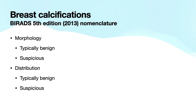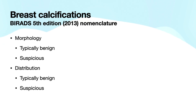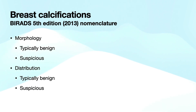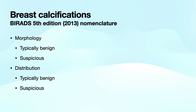With most findings in radiology, multiplicity and bilaterality is reassuring of benignity. But taking these two criteria — the morphology and the distribution together — can help us characterize things as typically benign or more suspicious. We'll see as we go through this talk that both the morphology and the distribution are at least equally important in determining whether something is more typically benign or more suspicious.